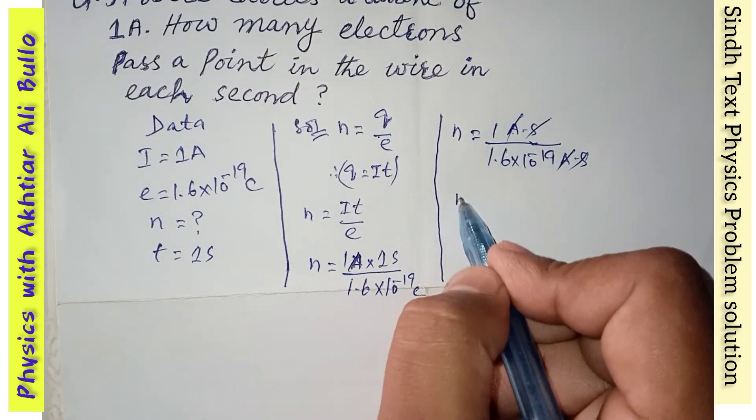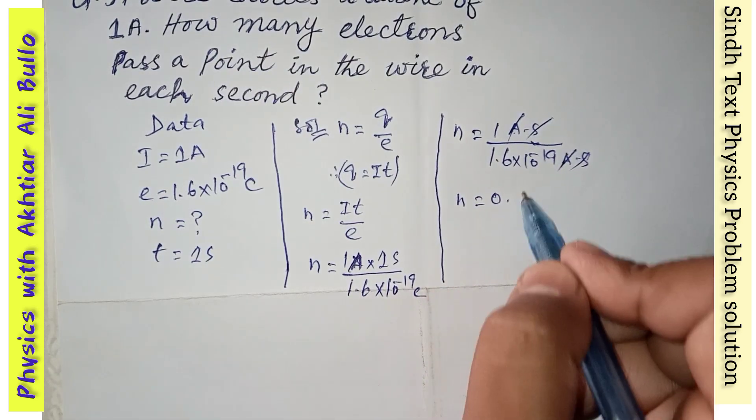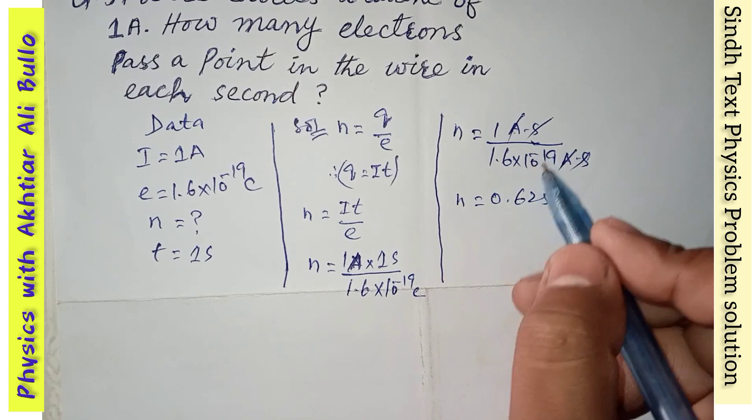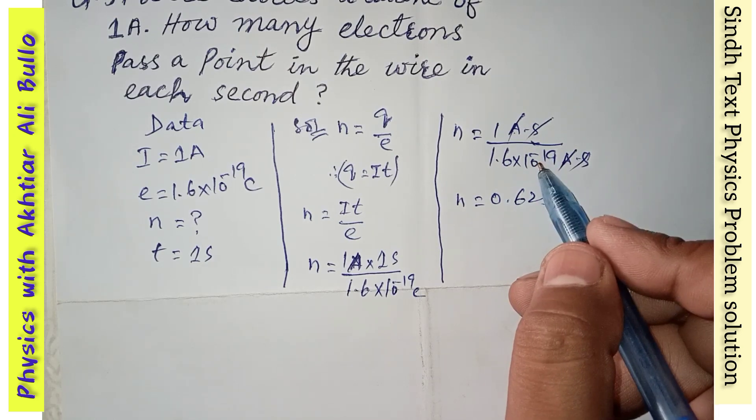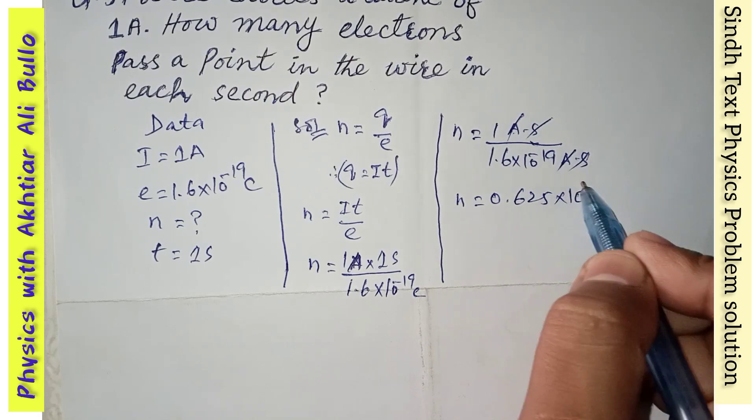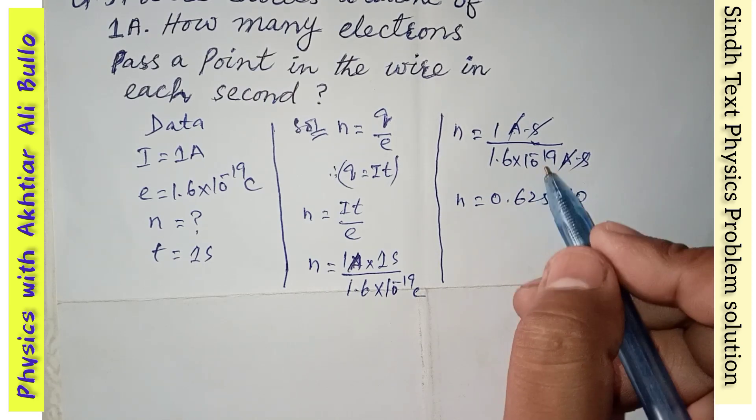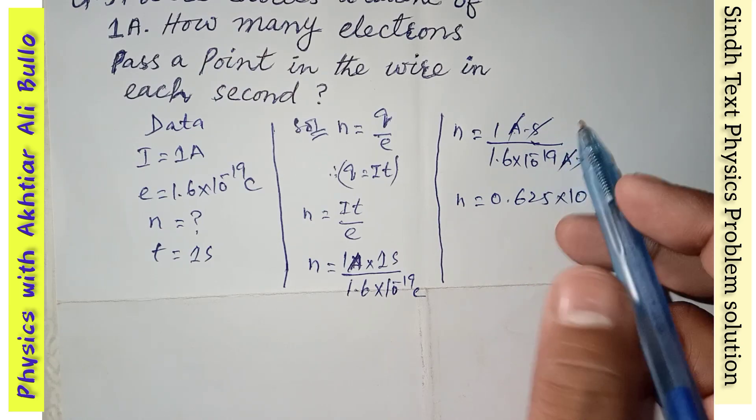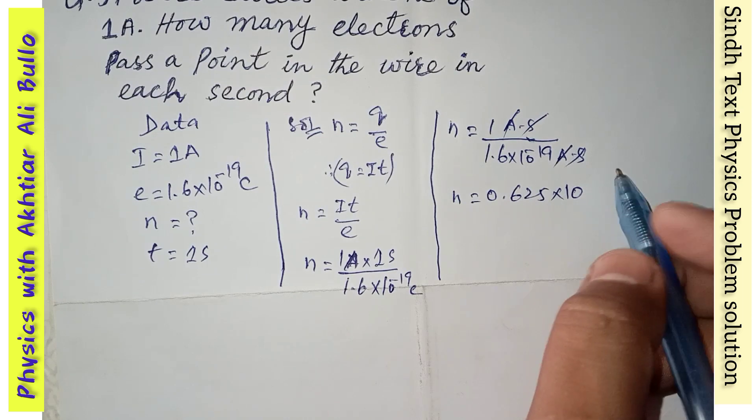by 1.6, then it will be 0.625 into... the power is minus in the denominator. When we will take it in the numerator, it will be positive, so